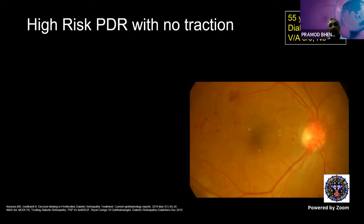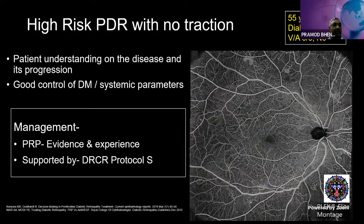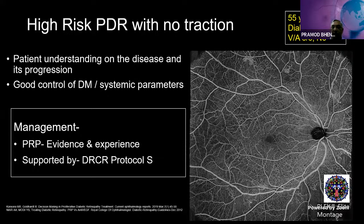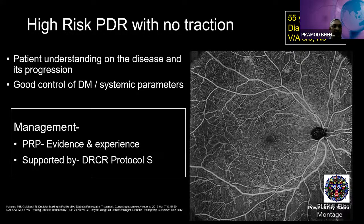For high-risk PDR without traction — such as a 55-year-old male with vision of 6/6 and neovascularization with no obvious traction — good diabetes control is essential. Evidence and experience suggest PRP is the best option in these eyes. Patients must be counseled thoroughly; they must understand the consequences of poor follow-up and poor diabetes control.